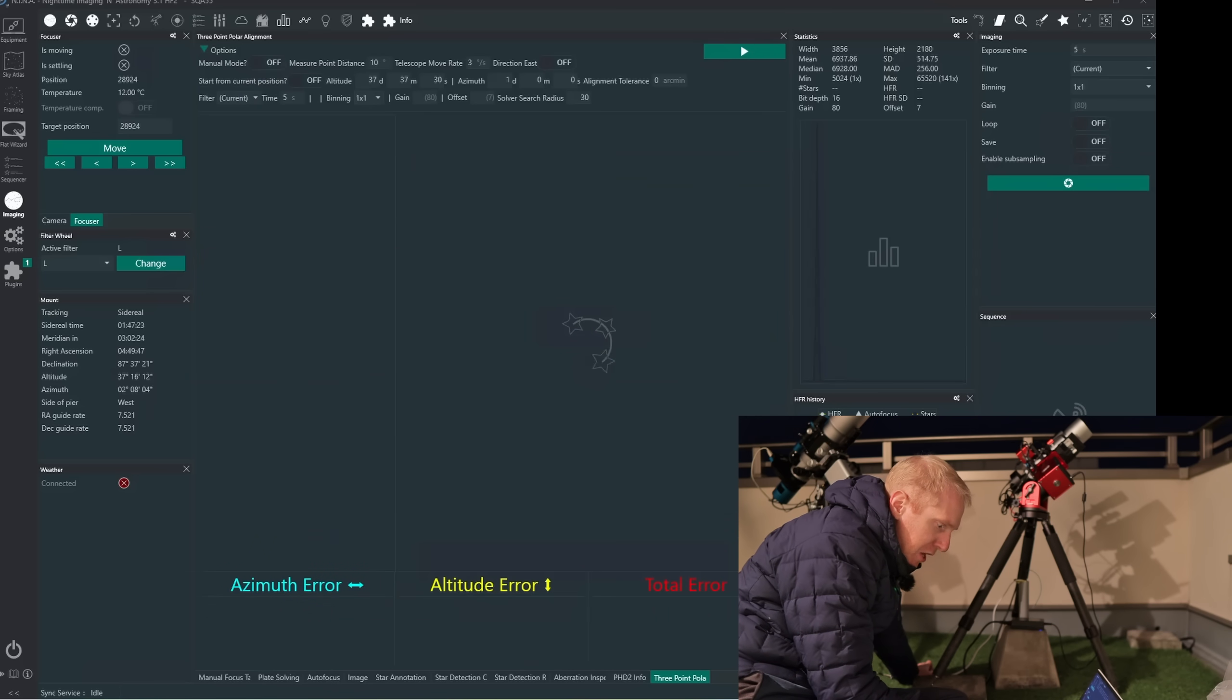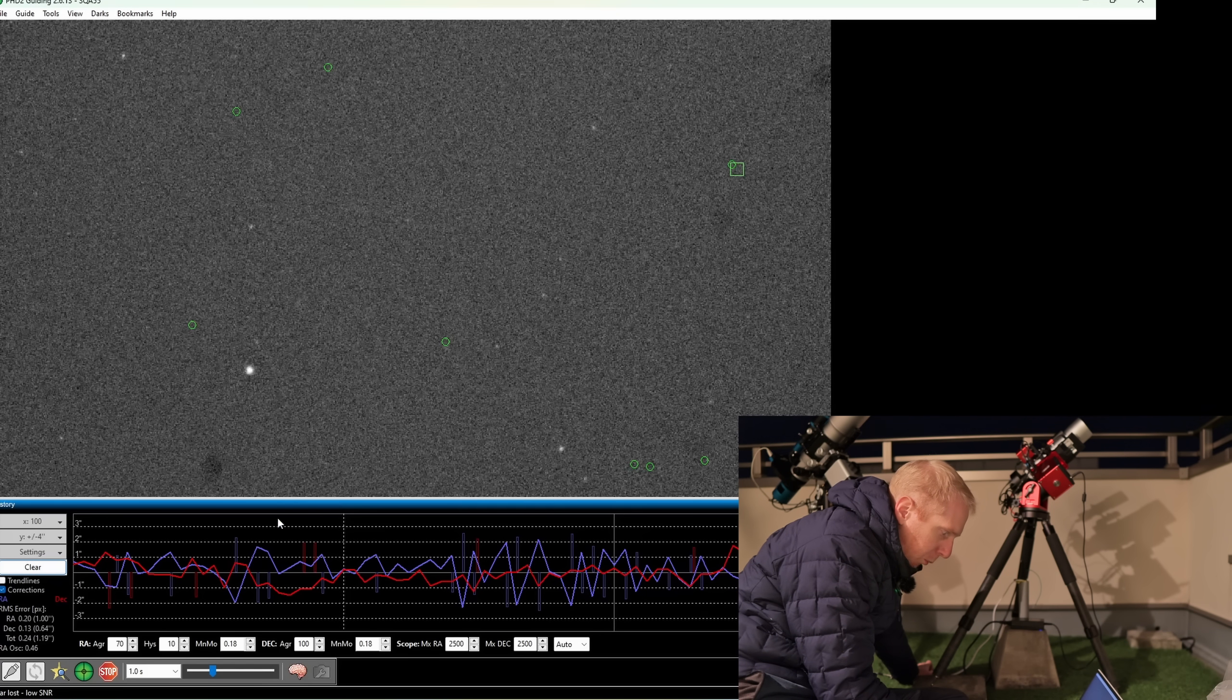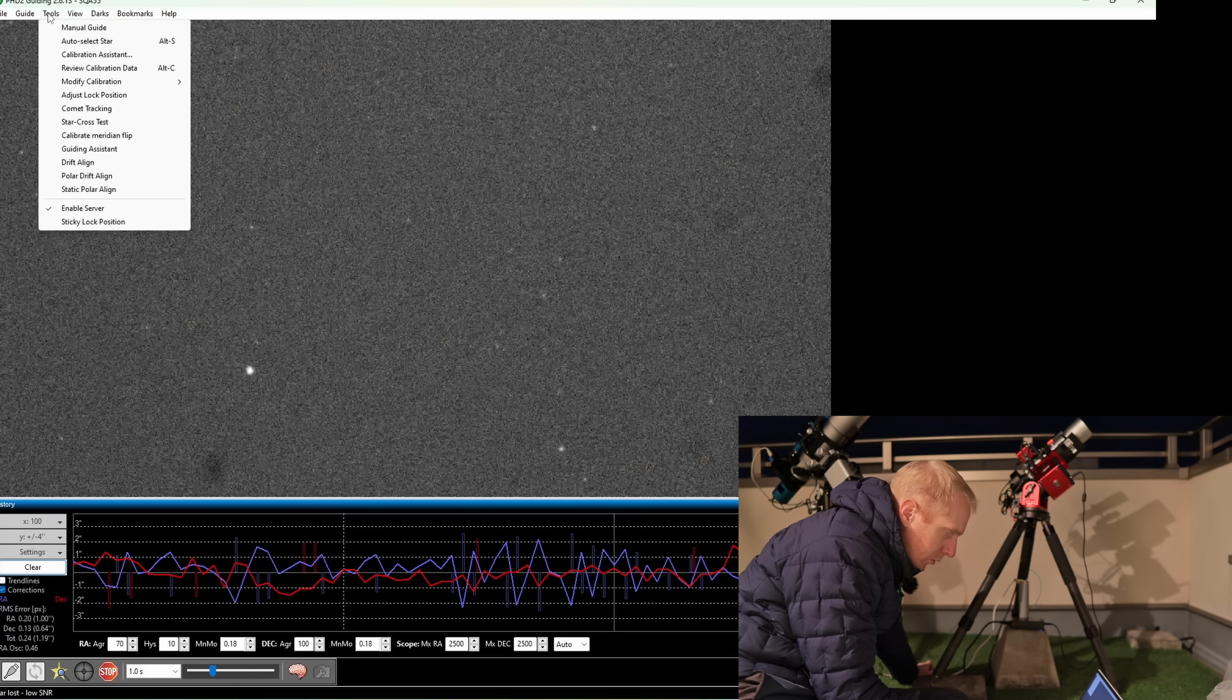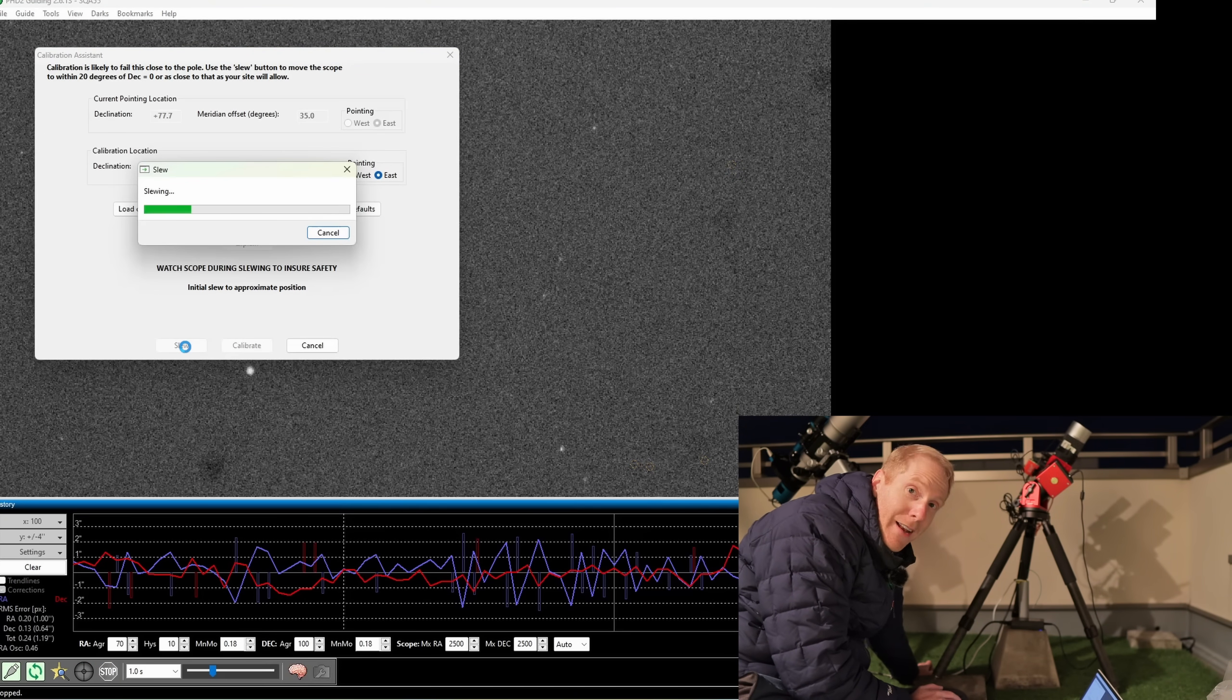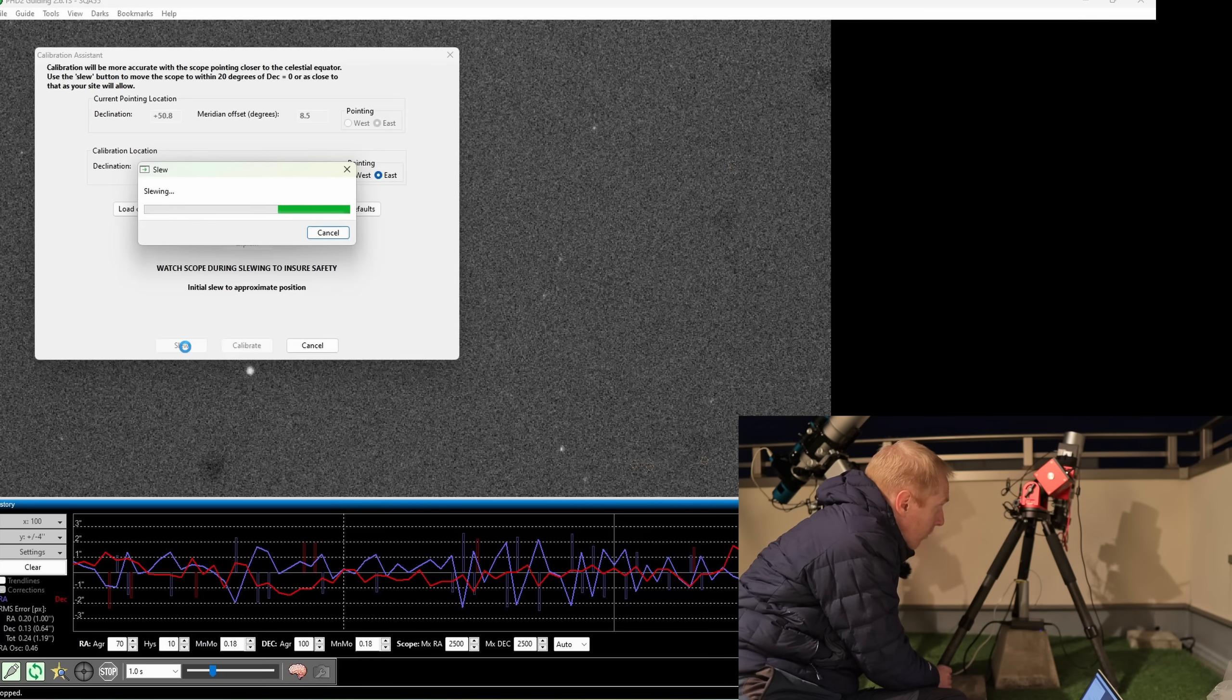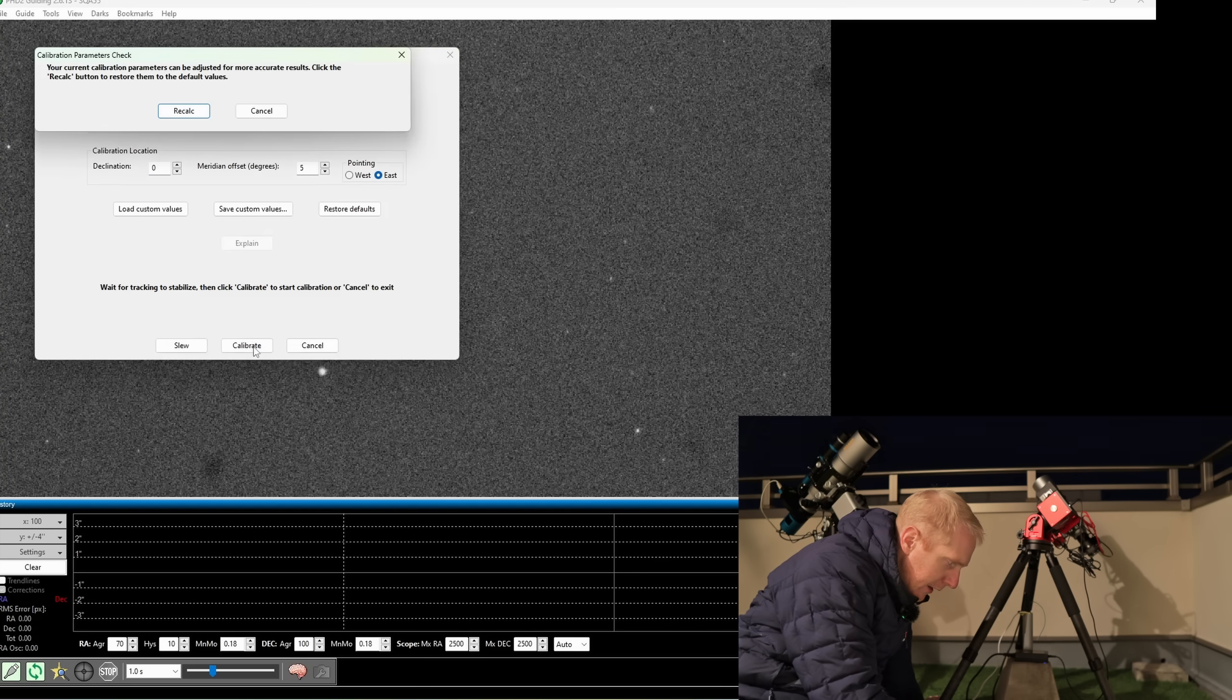So let's open up PHD2. We can point PHD2 towards the celestial equator, so I am going to go to the tools, calibration assistant, and tell it to slew not far to the celestial equator because I need to calibrate PHD2 once again since the angle of my guide scope is different. I'm also double checking that it's not tilting over. And now we are pointed in the right direction, so I'm just going to click on calibrate and let PHD2 do its job.